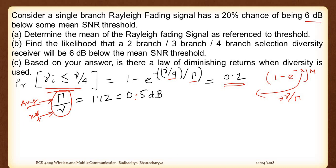The second part is to find the likelihood that a two-branch, three-branch, or four-branch selection diversity receiver will be 6 dB below the mean threshold. We have to find the probability when m equals 2, m equals 3, and m equals 4. The equation becomes: 1 minus e to the power minus gamma by 4 divided by capital gamma, whole to the power m.